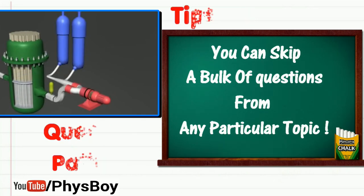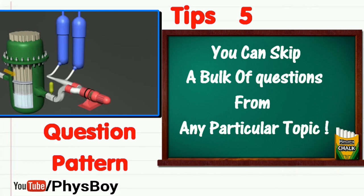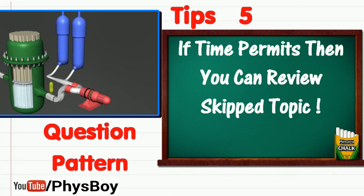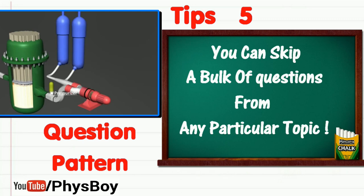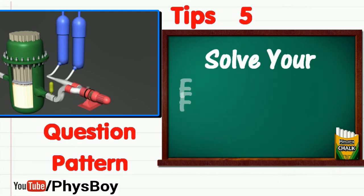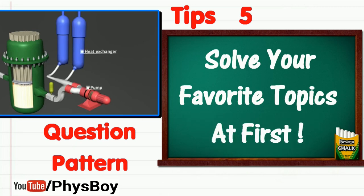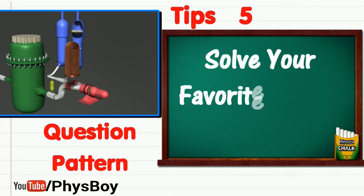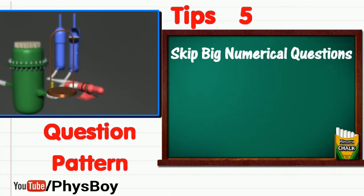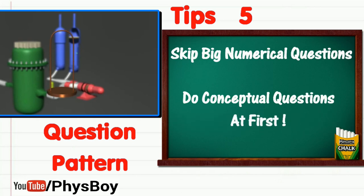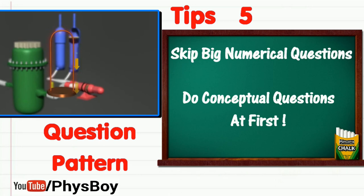You can go to the next bulk of questions from another branch of physics and, if time permits, come back to the skipped topics in the last 5 to 10 minutes. My suggestion is: if you don't like a particular topic, skip that bulk because questions are grouped by subject. Solve your favorite topics first since time is very short. Also, when you encounter a big numerical type problem, skip it — there are many conceptual questions you can solve easily. Don't invest time in heavily calculative problems; answer conceptual questions first and review numerical problems later if time permits.